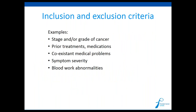These are some examples of inclusion and exclusion criteria, which depend on the study. Often this includes things like the grade or stage of your cancer — is it localized or already spread? Have you already been treated with prior medications or not? Do you have other medical problems? The severity of your symptoms may also be used as inclusion or exclusion criteria, as well as variations in your blood work results or imaging tests.